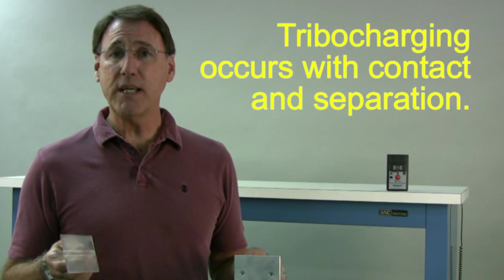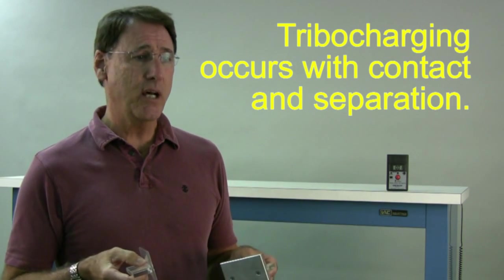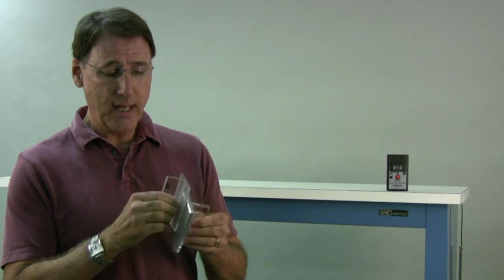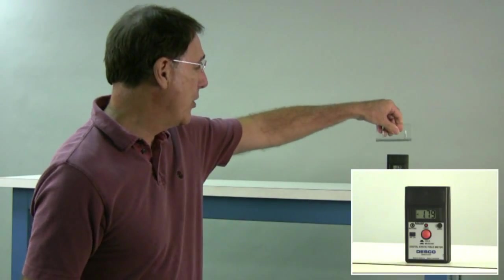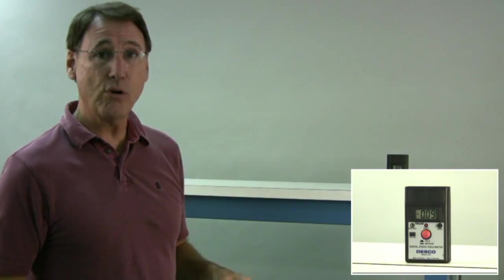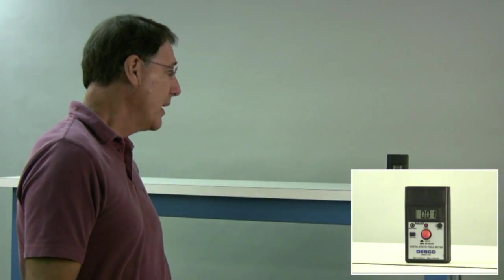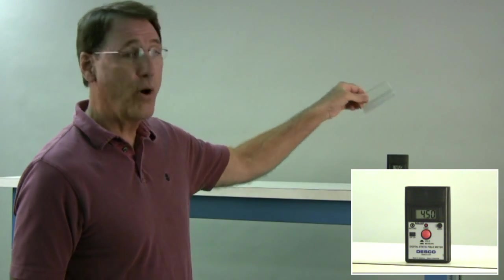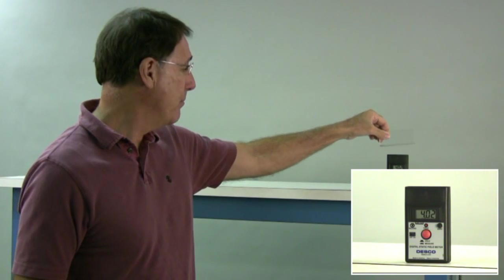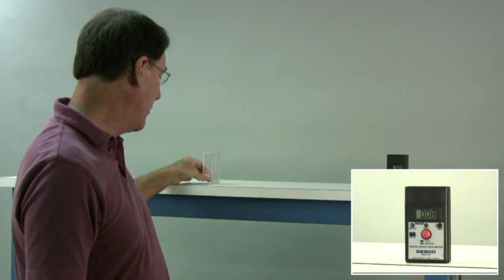Tribocharging is contact and separation that generates electrostatic charges, and we have an electrostatic field meter here. So here we have about 2,000 volts on the conductor, and over here we have 3 or 4,000 volts on the insulator.